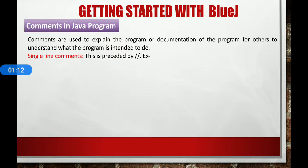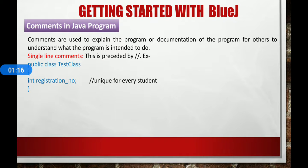Single line comments are preceded by double slash. For example, here it explains about the registration number that is unique for every student. So here the registration number tells the other users that it should be unique for every student.